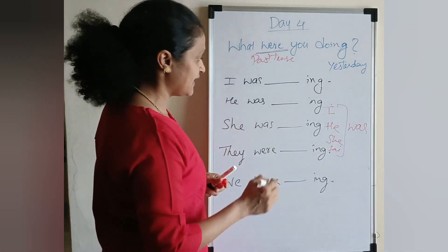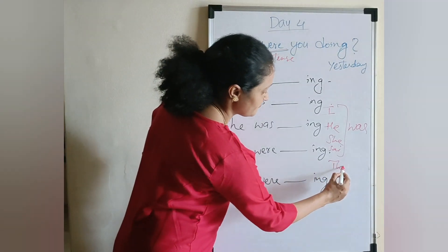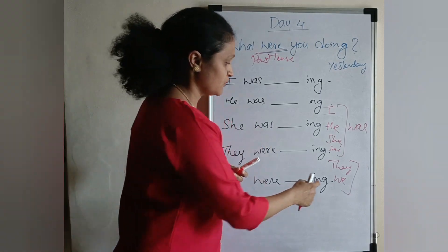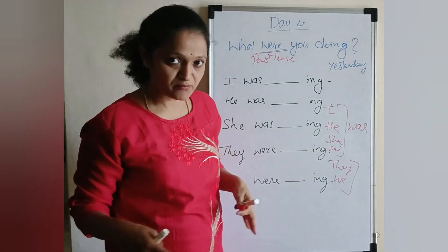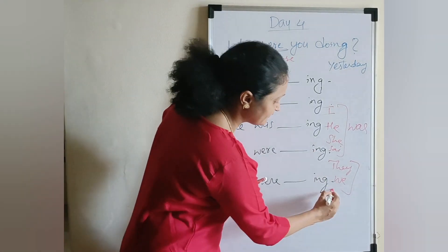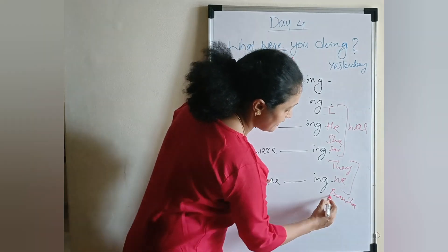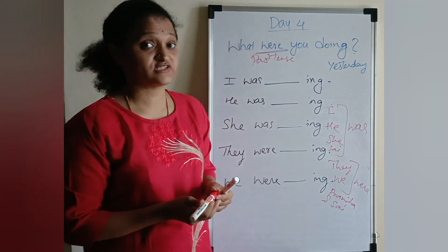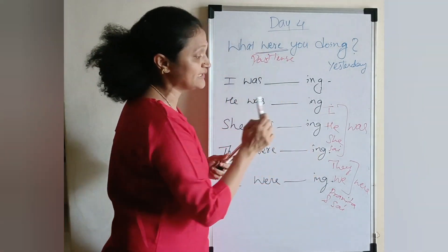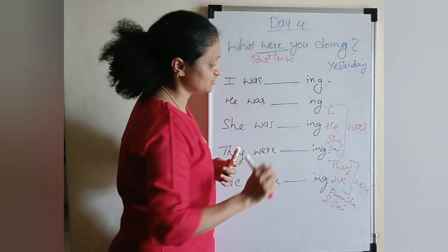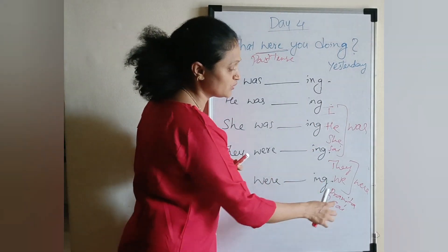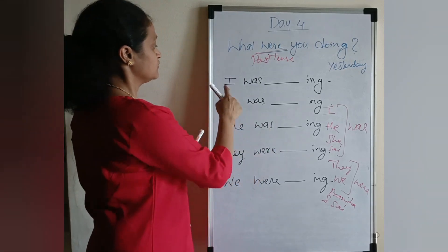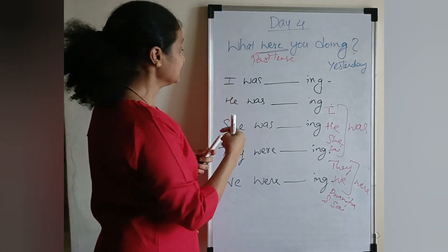Saai 'was'. Then for 'they' and 'we' — they and we are plural. If we take plural names like Pranita and Saai together, that is also plural. If the noun is singular, we use 'was'. If the noun is plural, we use 'were'. Now let us come back to the sentences — how we are going to talk in English.